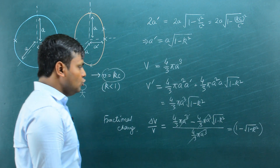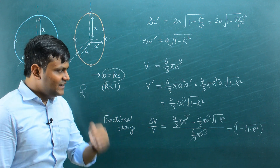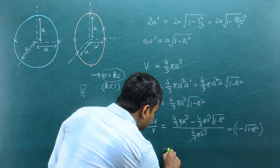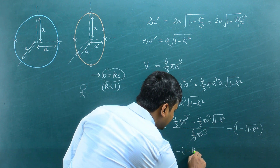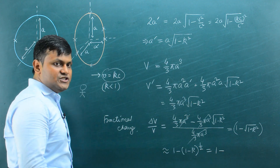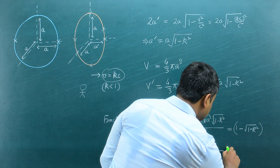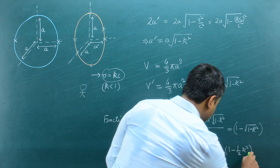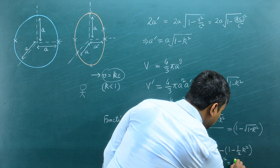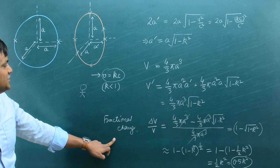Now, if k is very much less than 1, then k² is a very small quantity. We can approximate using the binomial expansion: 1 − (1 − k²)^(1/2) ≈ 1 − (1 − k²/2), retaining only the first two terms since higher-order terms are negligibly small. This simplifies to k²/2, or 0.5k², which is the approximate fractional loss in volume.